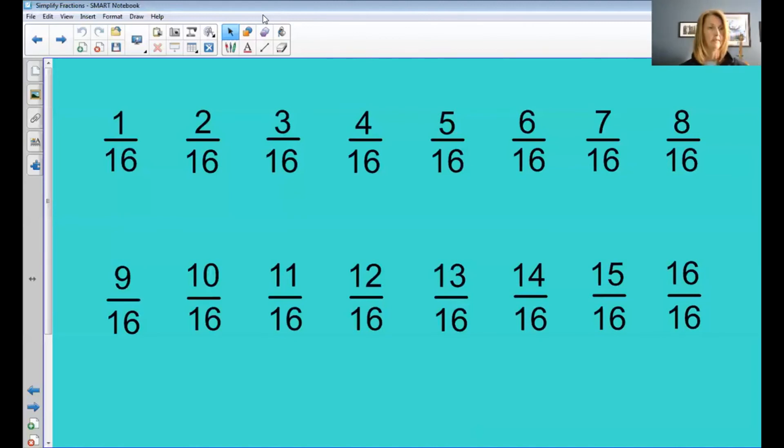All right team. I trust that you paused the video, simplified as many of these fractions as possible, and hopefully you've kept track of your answers because we're going to review our answers now. So first, were you able to identify all the fractions that could not be simplified? The ones that are already in their simplest form? Because there were eight fractions in this set, eight fractions that are already in their simplest form. I'm going to show them to you now.